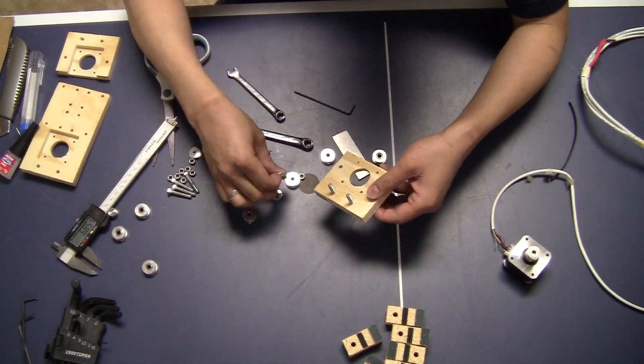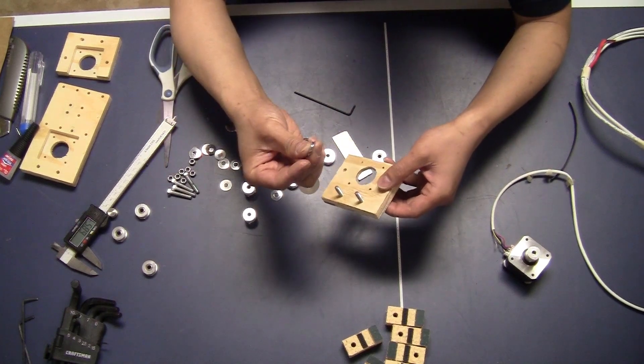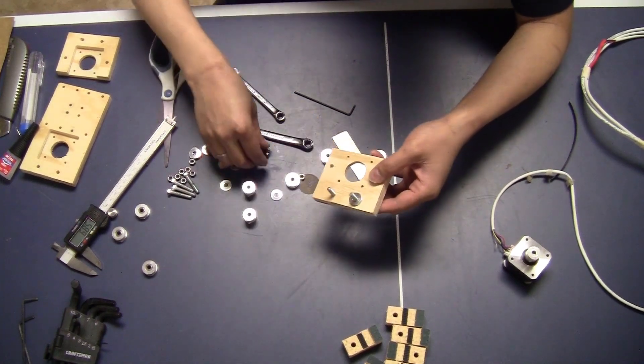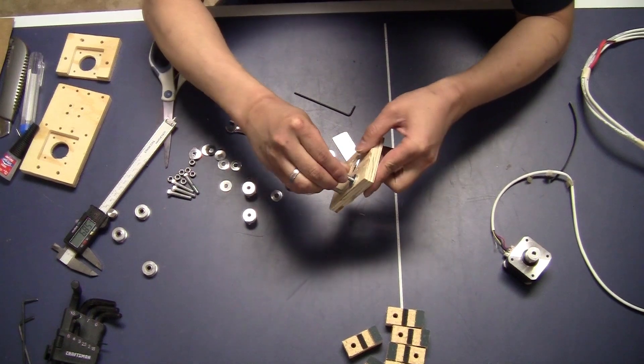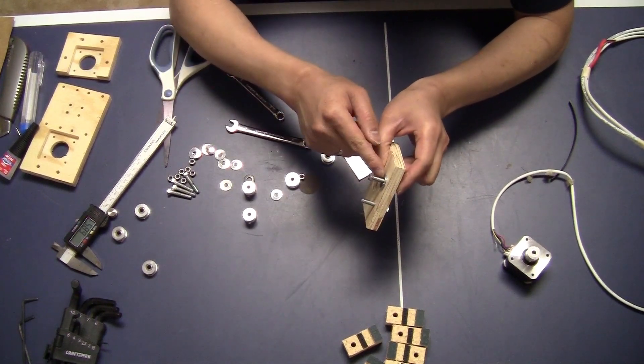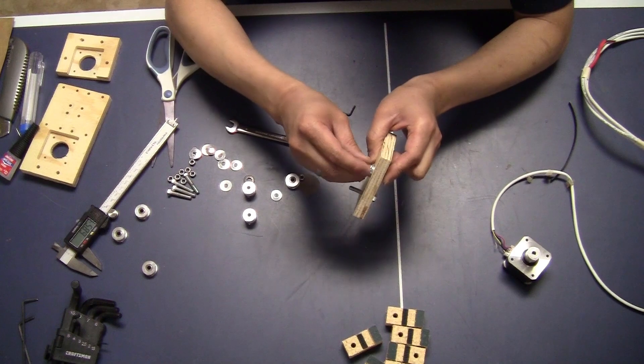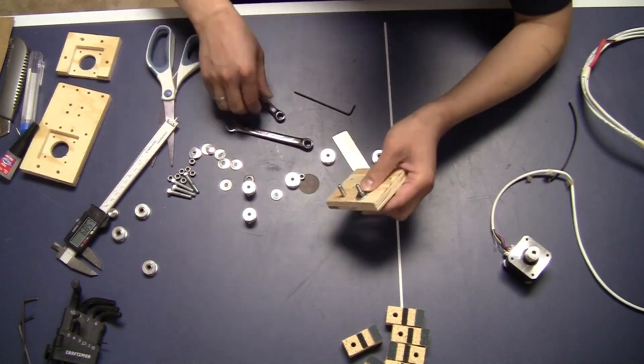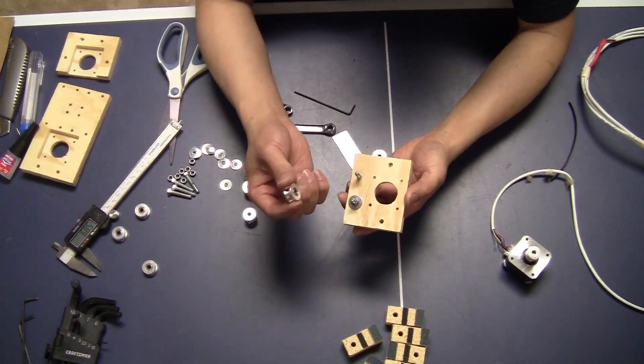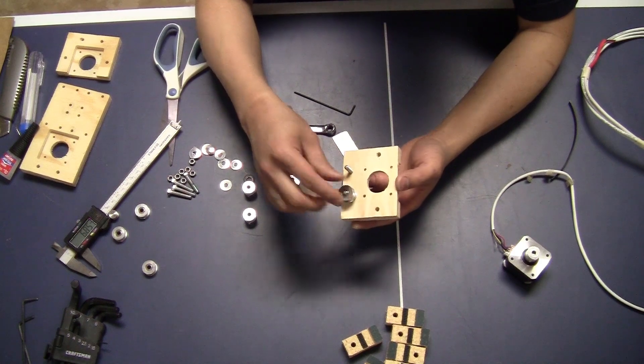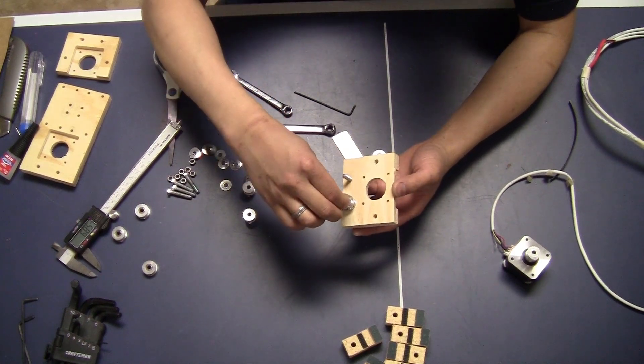So just slide them through here. Now just take some of the washers, about three of them. And then put one of the nuts on it. So the total thickness here of the washer and the nut is about 6mm. And then you just slide this idler in here.